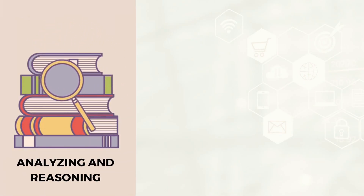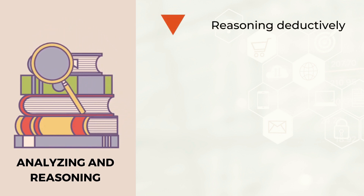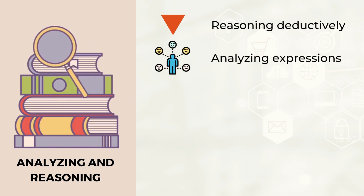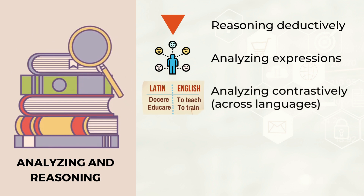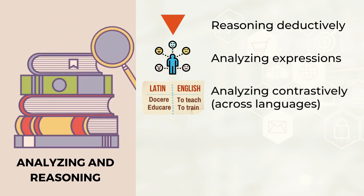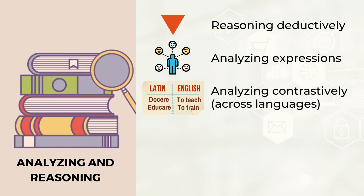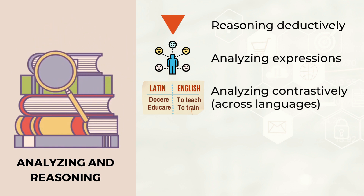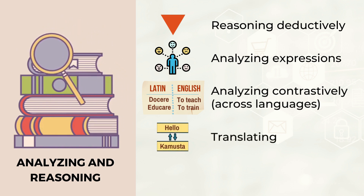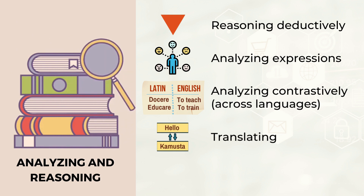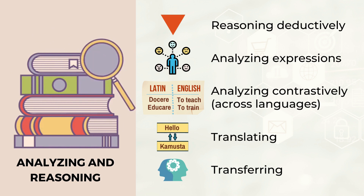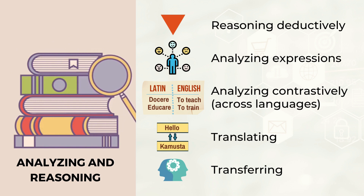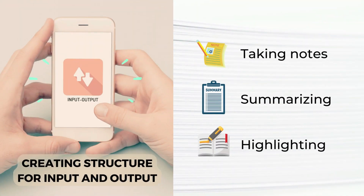The next one is analyzing and reasoning. There are five techniques: one, reasoning deductively, or using general rules and applying them to new target language situations. Two, analyzing expressions by using the definitions of different parts to understand the meaning of the whole expression. Three, analyzing contrastively or across languages, such as comparing elements like sounds, vocabulary, grammar of the new language with one's own language to find similarities and differences. Four, translating or converting a target language expression into the native language and vice versa. And five, transferring or applying directly knowledge of words, concepts, or structures from one language to another.